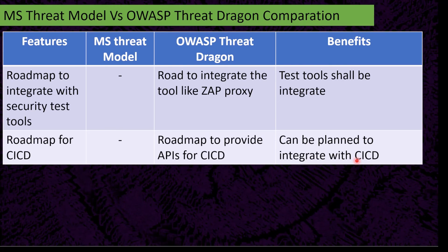These are some of the key comparison points between the MS Threat Model and OWASP Threat Dragon. Based on your requirements, you can select the appropriate tool, create your threat model, and execute it. I have completed this session and will see you in the next session. Bye.